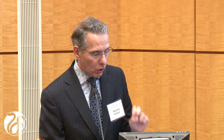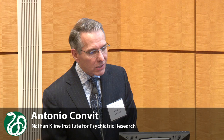When you look at slow-wave sleep and how it relates to insulin sensitivity, the more slow-wave sleep the kids have, the more insulin-sensitive they are — this is all in the same group of obese kids. And on the right side for a measure of inflammation, the more slow-wave sleep the kid has, the less inflammation they have. CRP, or C-reactive protein, is an acute reactant, so it's different than what we've been talking about today, but nevertheless it's important.